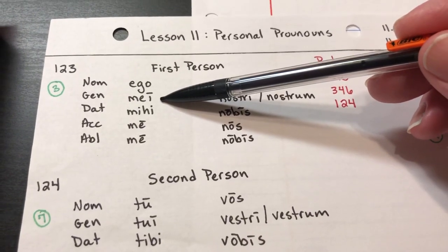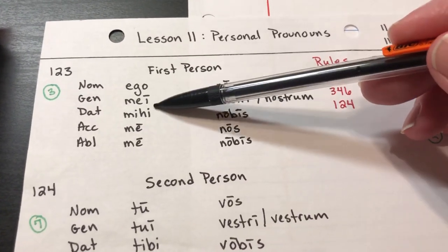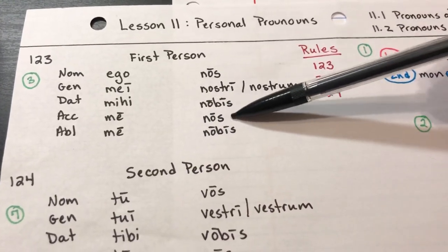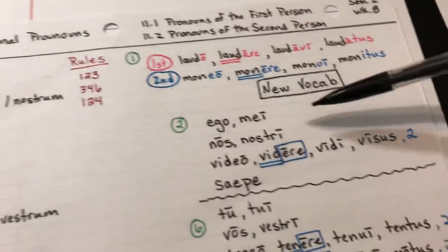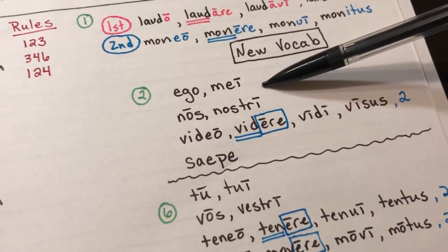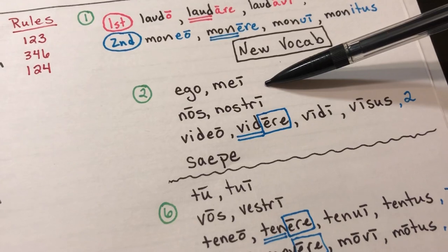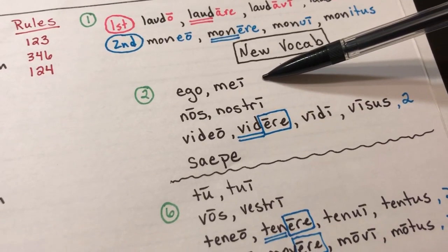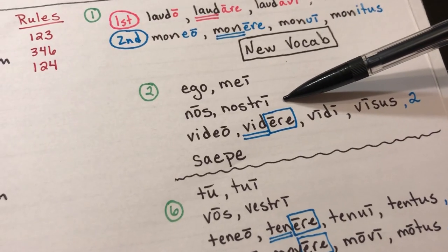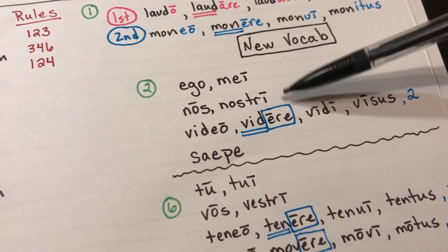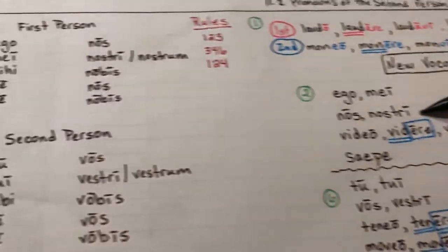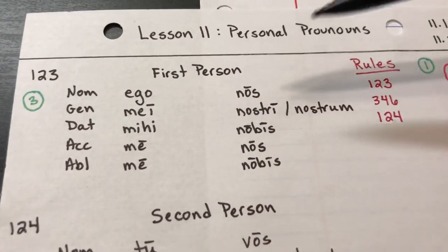These are our first person singular forms and these are our first person plural forms. So with that in mind, the singular would be 'I' and the plural would be 'we,' but both are first person — first person singular and first person plural. We took some time just looking at them.